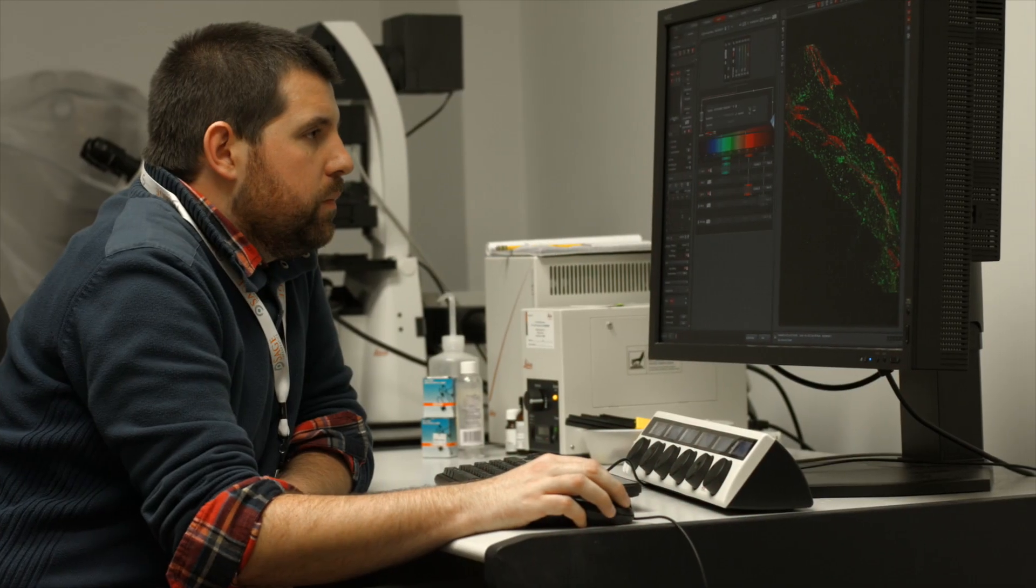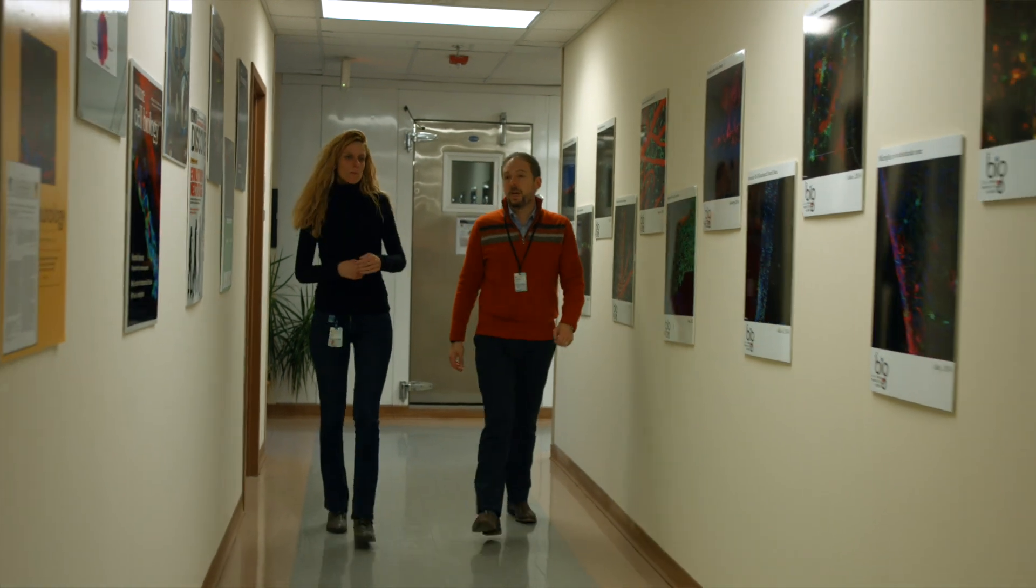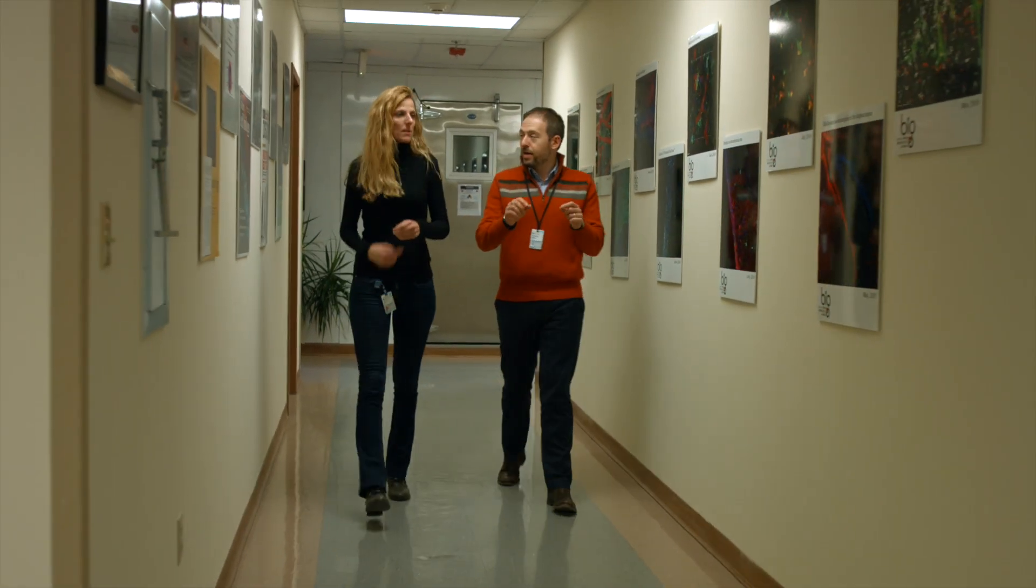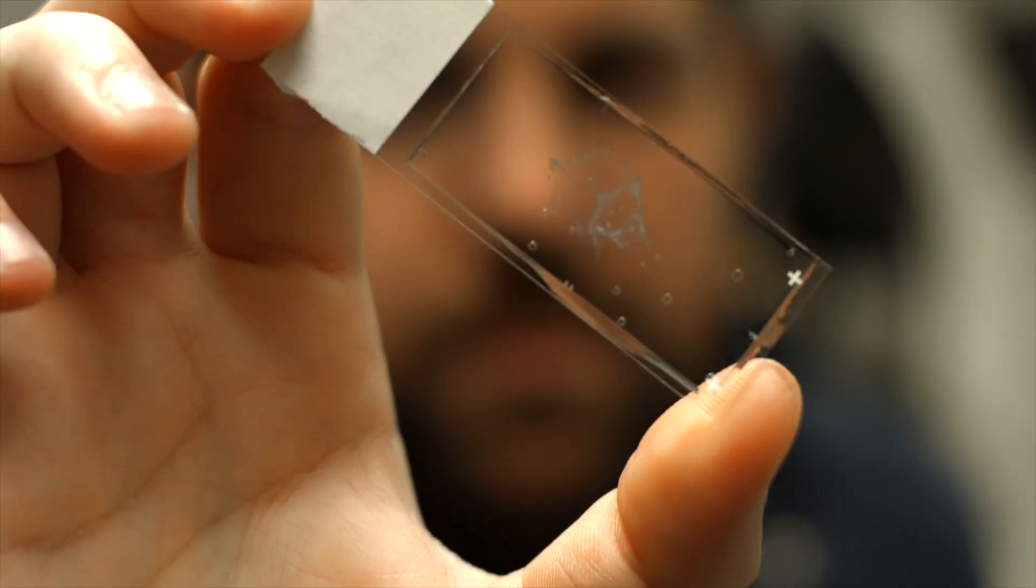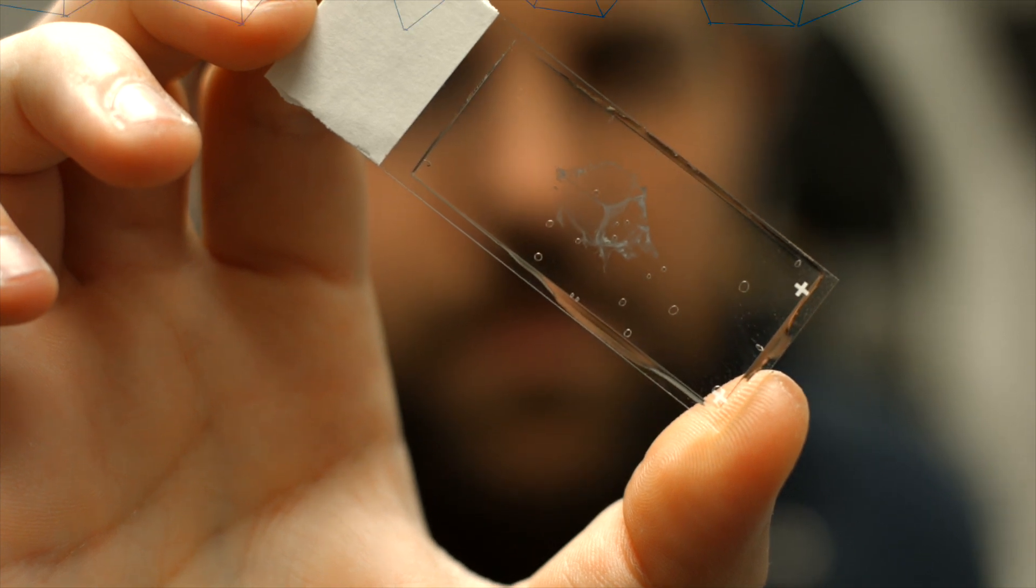We discovered a network of vessels in the covering of the brain, called the meninges. And these vessels are lymphatic vessels in nature. They are unique lymphatics, but they are bona fide lymphatics.